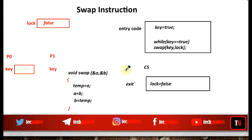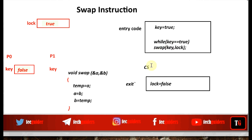Now let's see whether this solution satisfies mutual exclusion. Suppose we have two processes P0 and P1, and lock is initialized to false. P0 needs to enter the critical section, so it executes the entry section code by setting key to true. Since key is true, the swap instruction is executed once. As a result, the false value from lock is transferred to key, and the true value from key is transferred to lock. So key receives a false value, the while loop breaks, and P0 enters the critical section. The lock is already set to true.